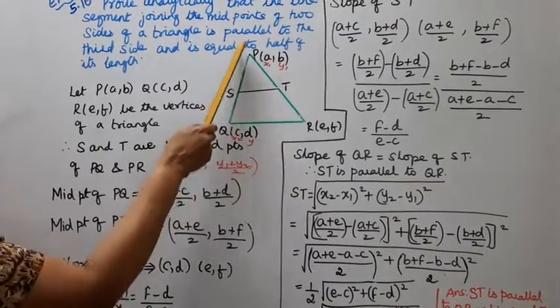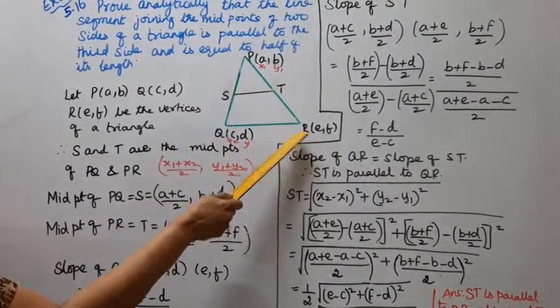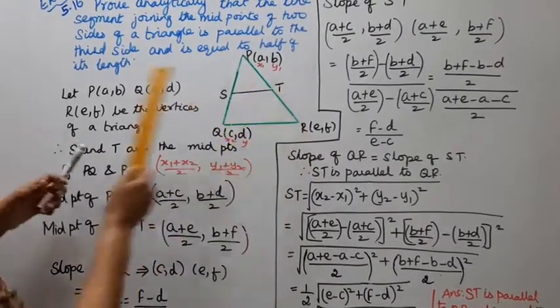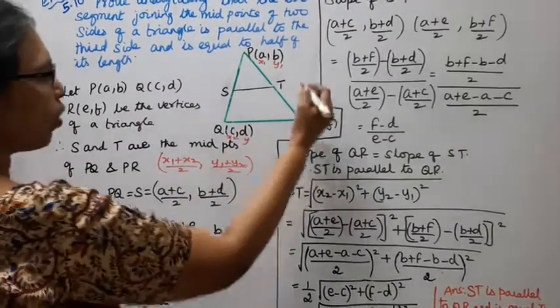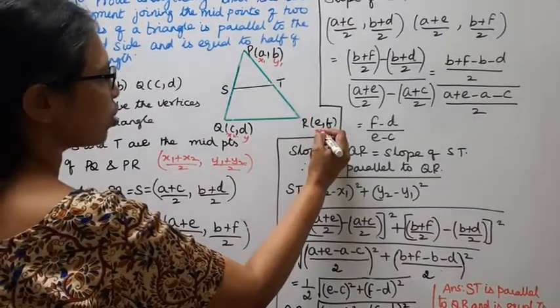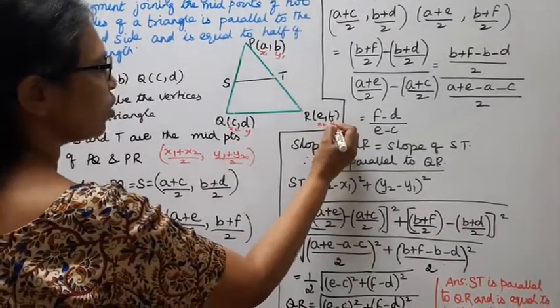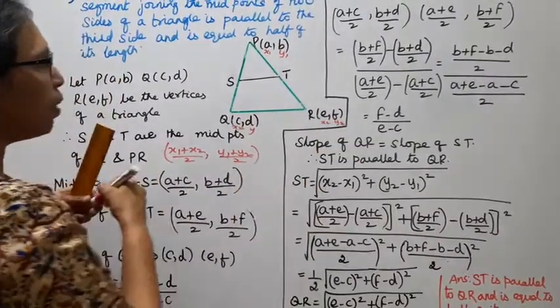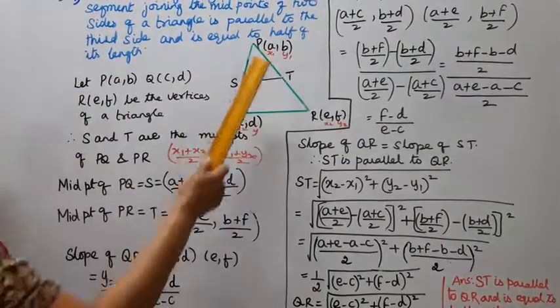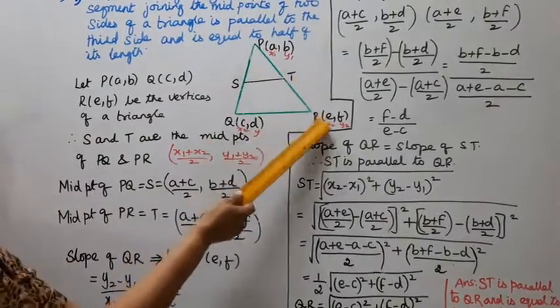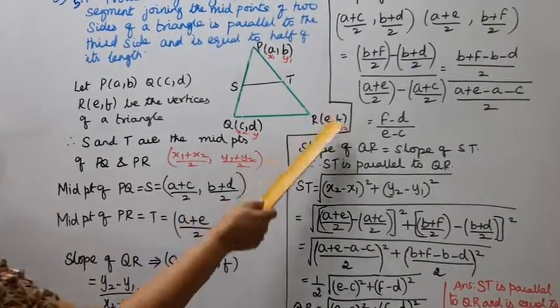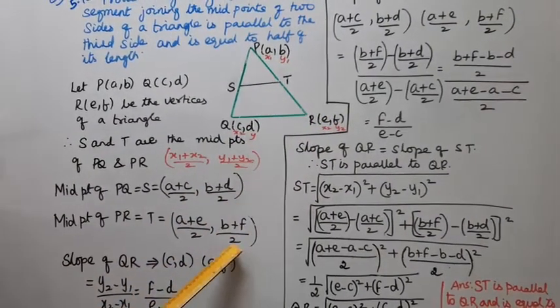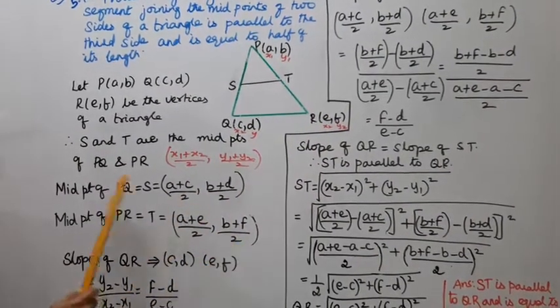Similarly, the midpoint of PR is T. Using the midpoint formula with P as (x1, y1) and R as (x2, y2), the midpoint T of PR is: A plus E divided by 2, B plus F divided by 2.